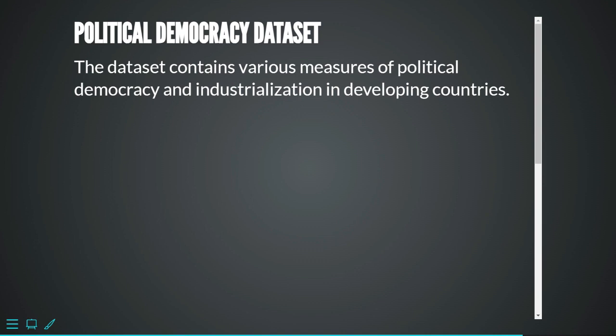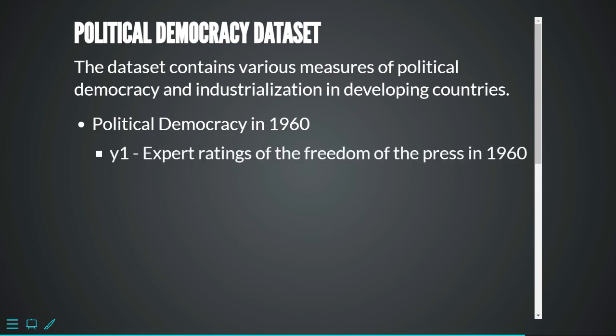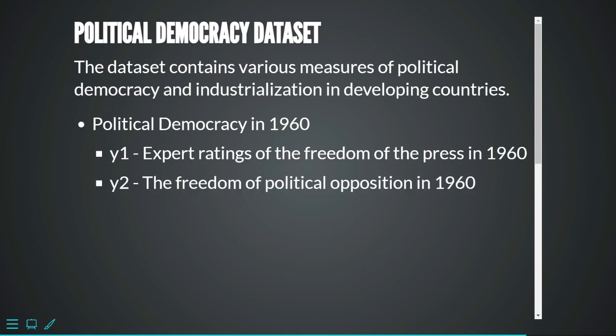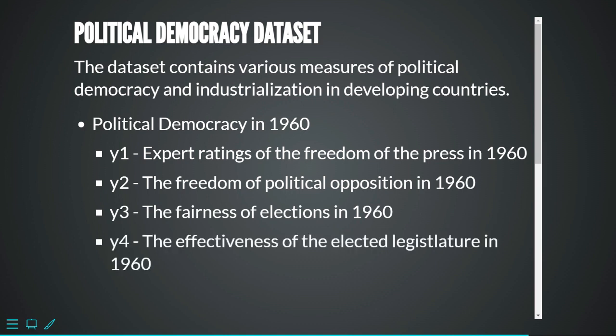The first latent variable is Political Democracy in 1960. The observed variables measuring it are: y1 - expert ratings of the freedom of the press in 1960; y2 - the freedom of political opposition in 1960; y3 - the fairness of elections in 1960; and y4 - the effectiveness of the electoral legislature in 1960. These are the observed variables measuring the latent variable Political Democracy in 1960.